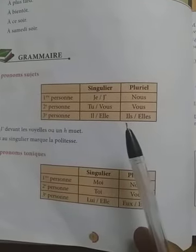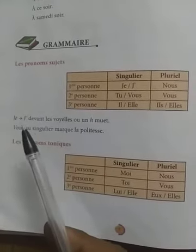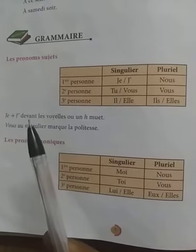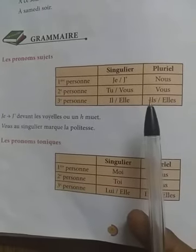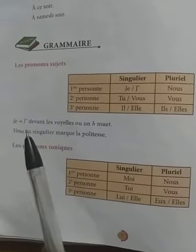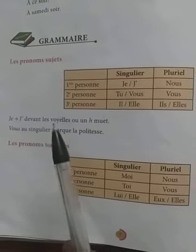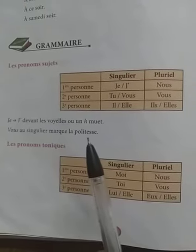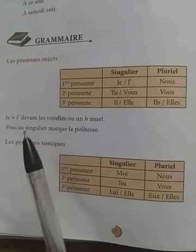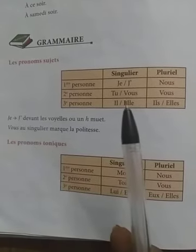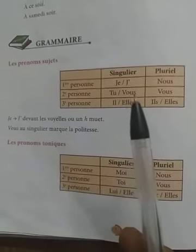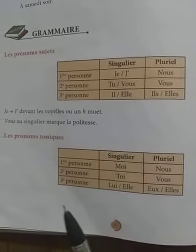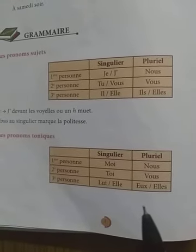By heart the subject pronouns — the first thing to learn in French. 'Je' becomes 'j'' apostrophe in front of a vowel, when the following verb starts with a vowel. 'Vous' can also be used in singular to show politeness. Use 'vous' when talking to unknown persons, strangers, or elders.